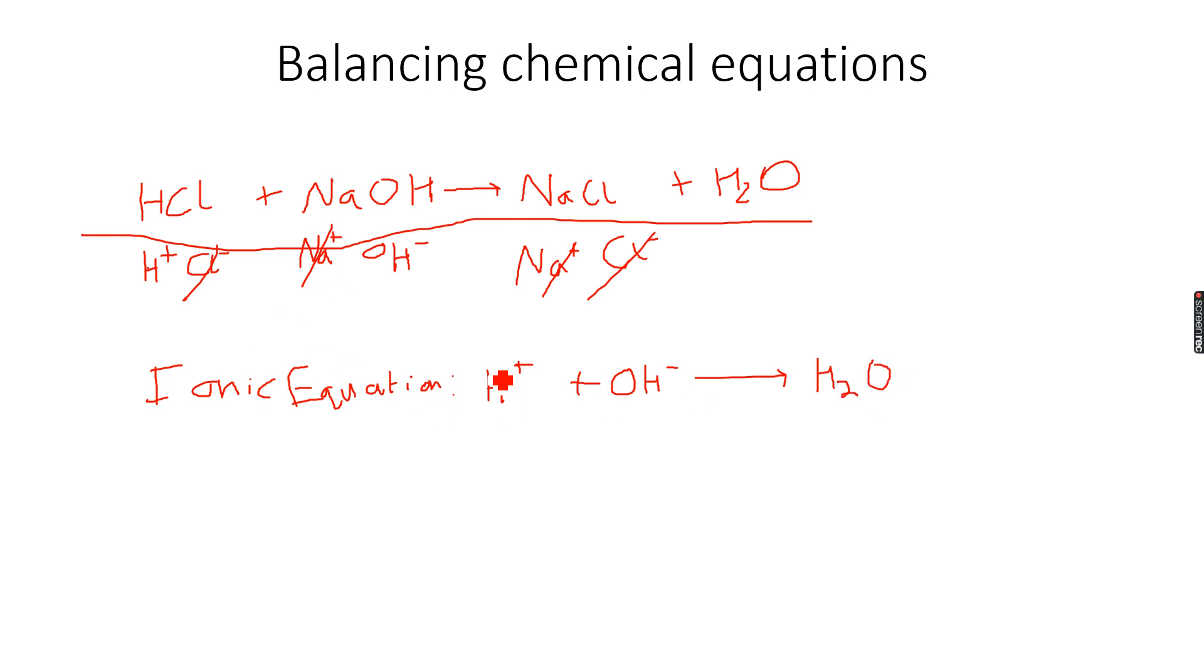So the Na+ ions and the Cl- ions are actually called spectator ions. They are actually called spectator ions because they are not taking part in the ionic equation. They are taking part in the reaction, but they are not taking part in the ionic equation. So the spectator ions are never written in the ionic equation because they are not changed, so we never write the spectator ions in the ionic equations.